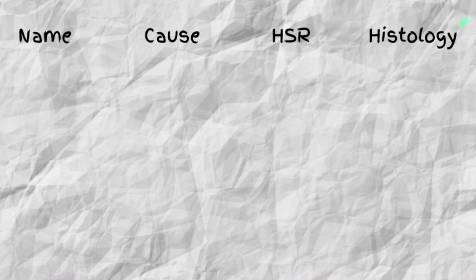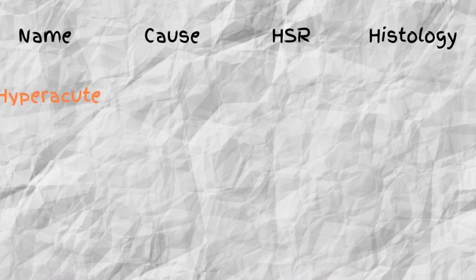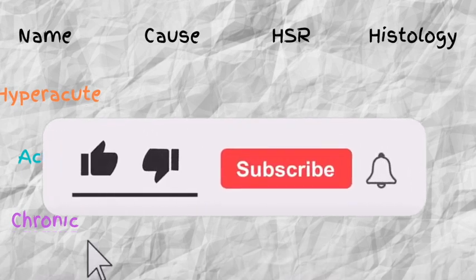The first thing you need to know is the name or type of transplant rejection. First, we have hyper-acute transplant rejections; second, acute transplant rejections; and last, chronic transplant rejections. The names of these types let you know when they can present.